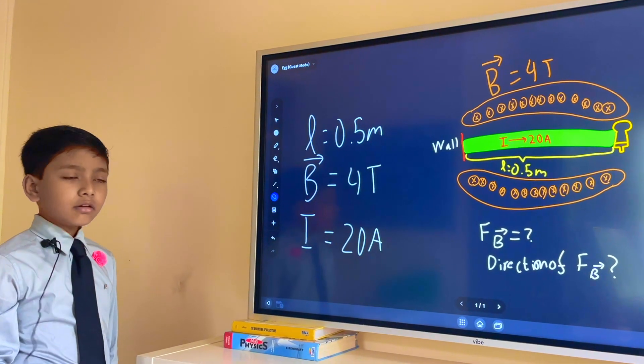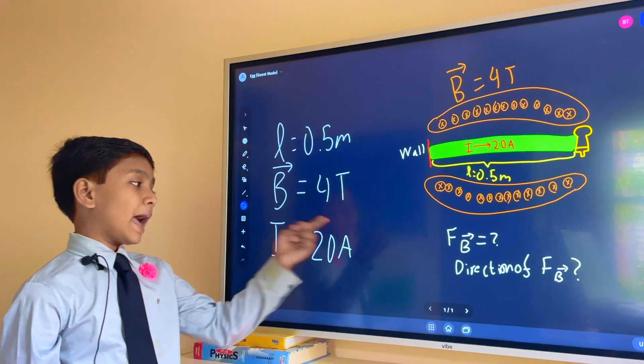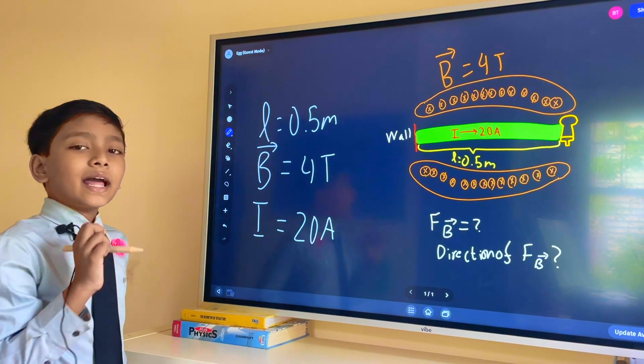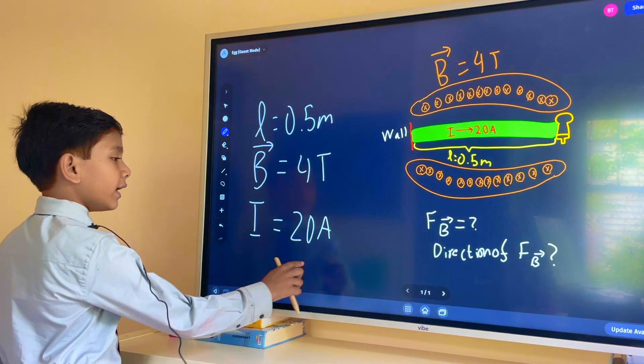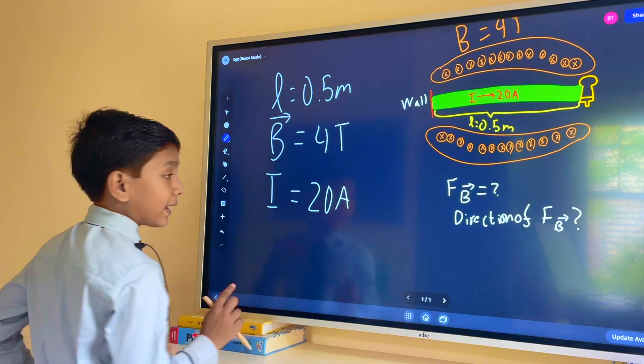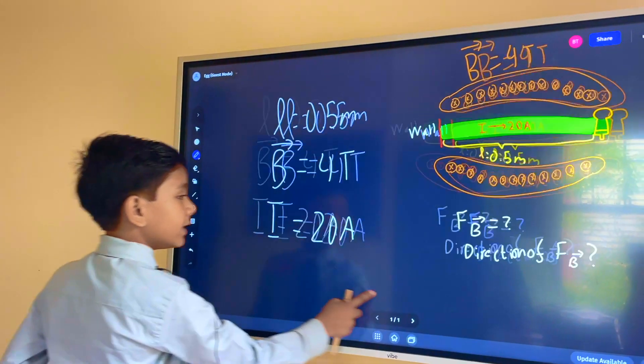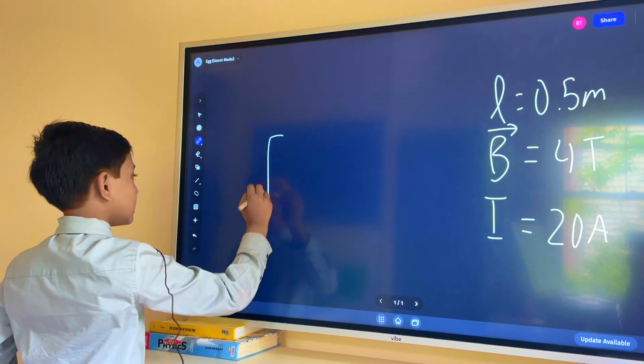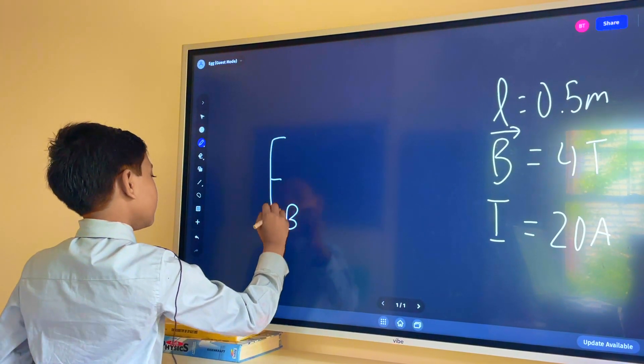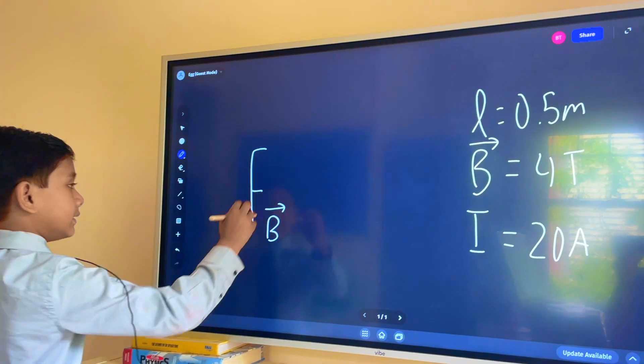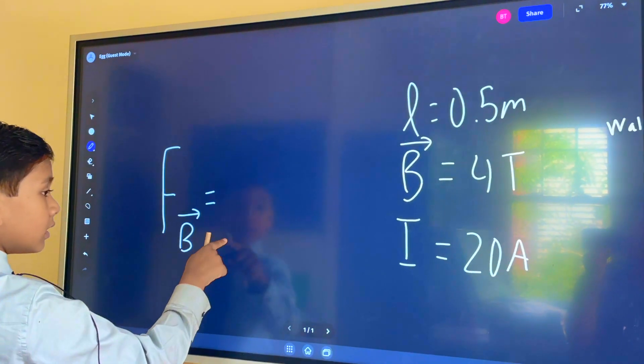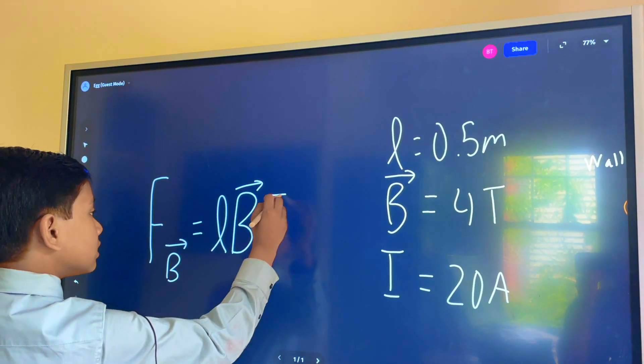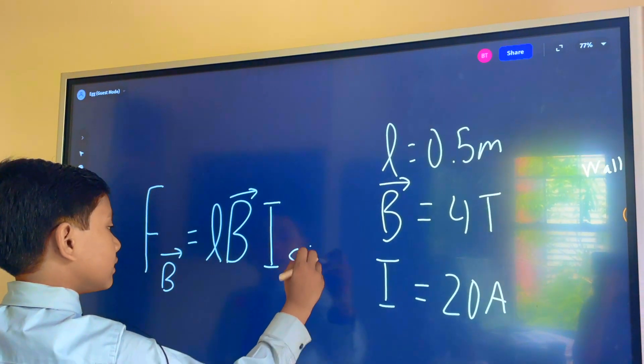So now how do we find the magnetic force with just this information? Well that's very simple. Why? Because the equation is actually very simple for the magnetic force. What is our equation? Well let's move it over here. The equation for magnetic force is FB. Of course put the vector sign there. It's equal to LBI sin 90.